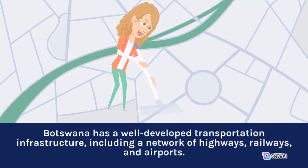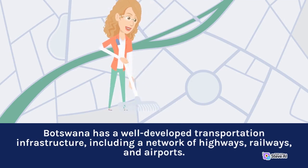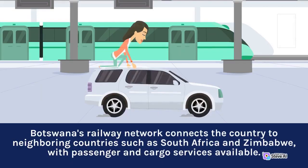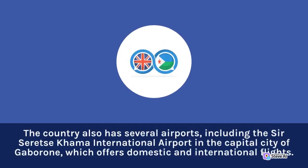Botswana has a well-developed transportation infrastructure, including a network of highways, railways, and airports. The country has over 17,000 km of roads, with major highways connecting cities and towns. Botswana's railway network connects the country to neighboring countries such as South Africa and Zimbabwe, with passenger and cargo services available. The country also has several airports, including the Sir Seretse Khama International Airport in the capital city of Gaborone, which offers domestic and international flights.